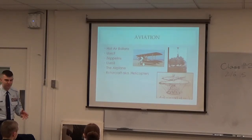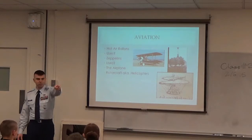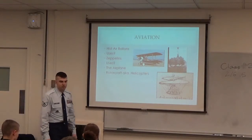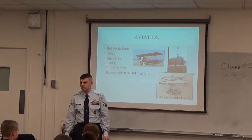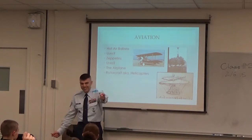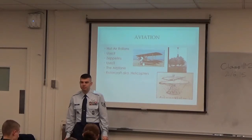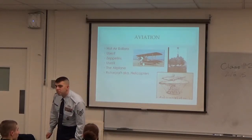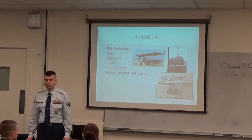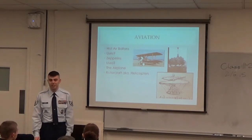Zeppelins — they were used in bombing raids. And there was a predecessor between hot air balloons and zeppelins called dirigibles, which were basically football-shaped hot air balloons. If you ever look at the Empire State Building, there are hooks on top that were originally supposed to be used to hook up dirigibles and zeppelins to the building. They were supposed to be the new sky ship — carrying people, eliminating traffic.